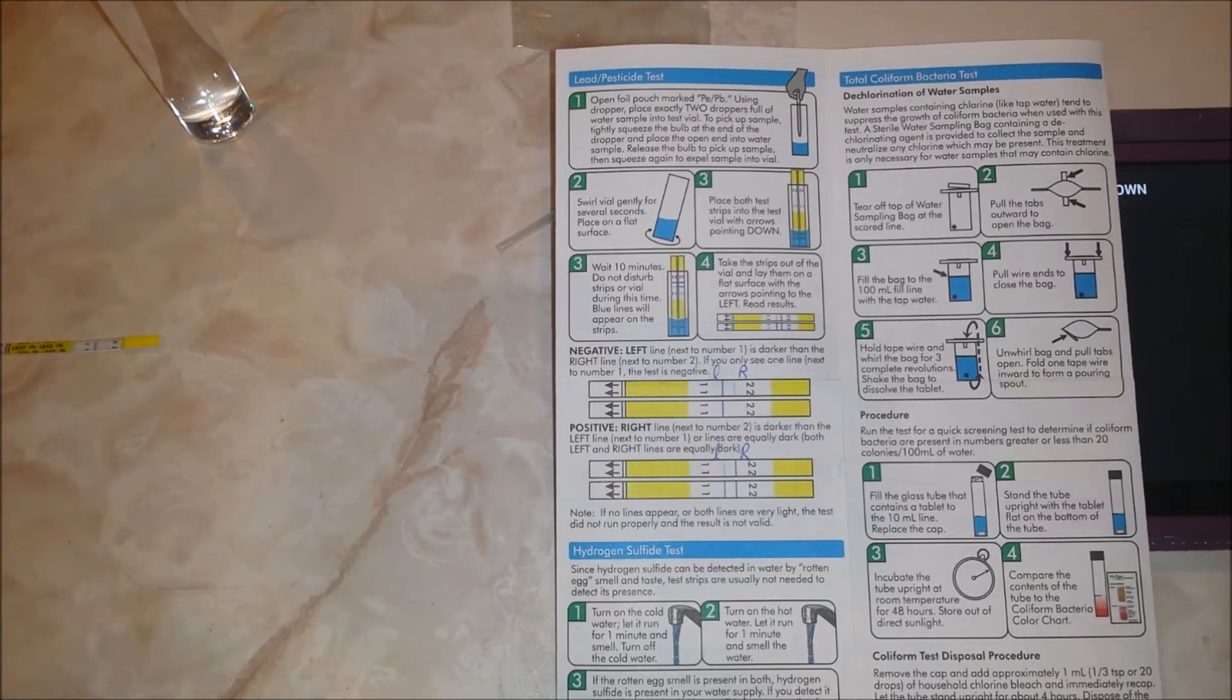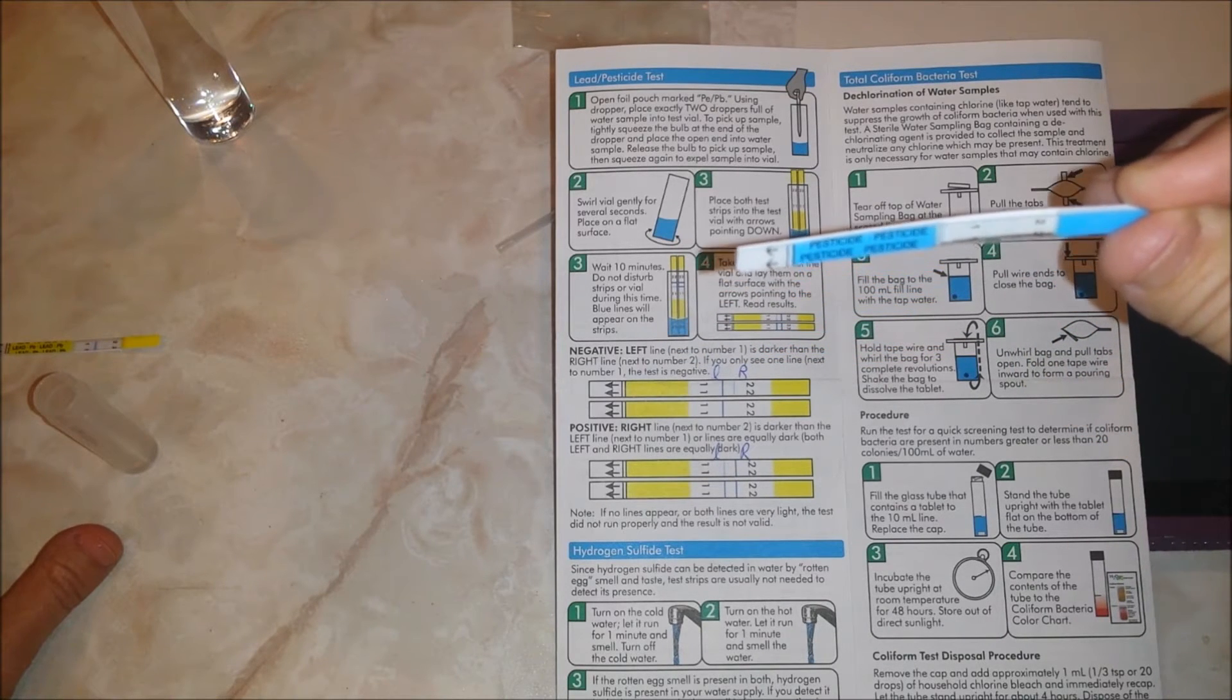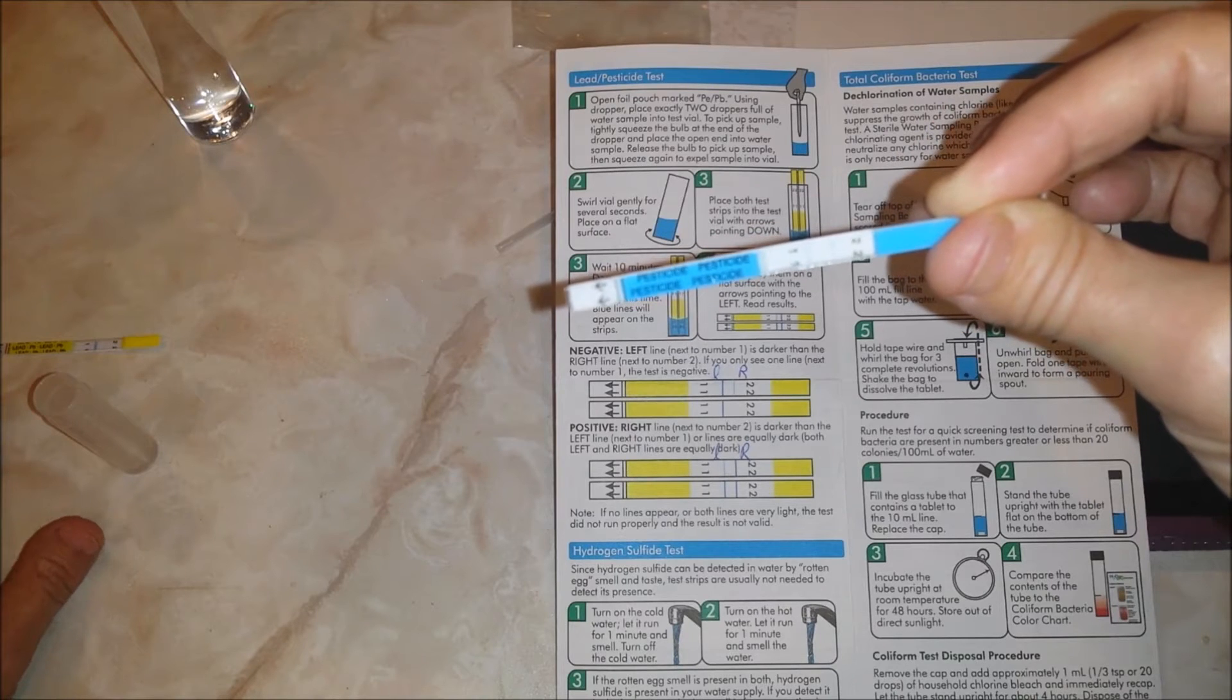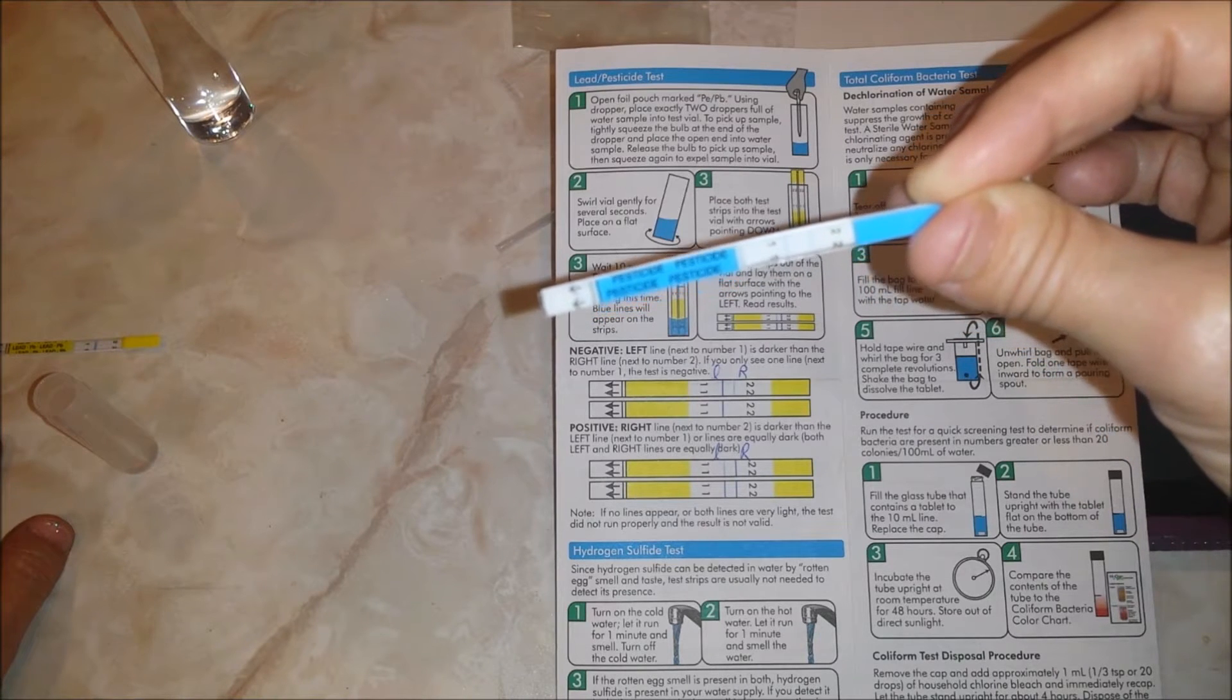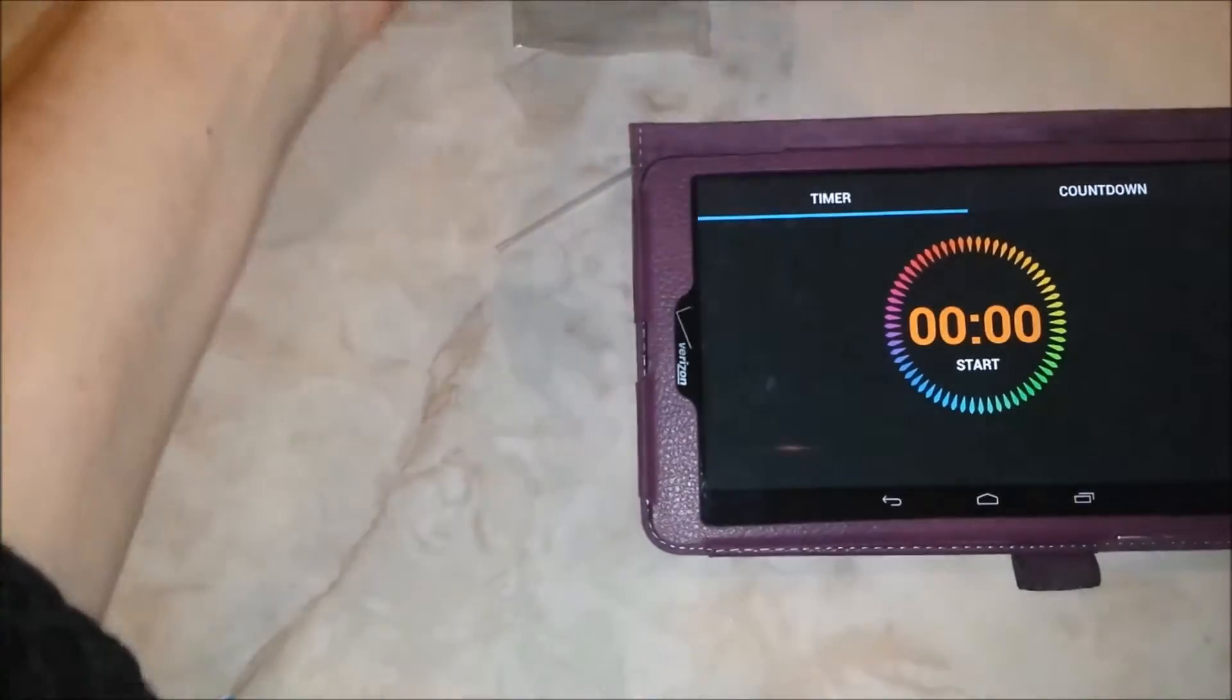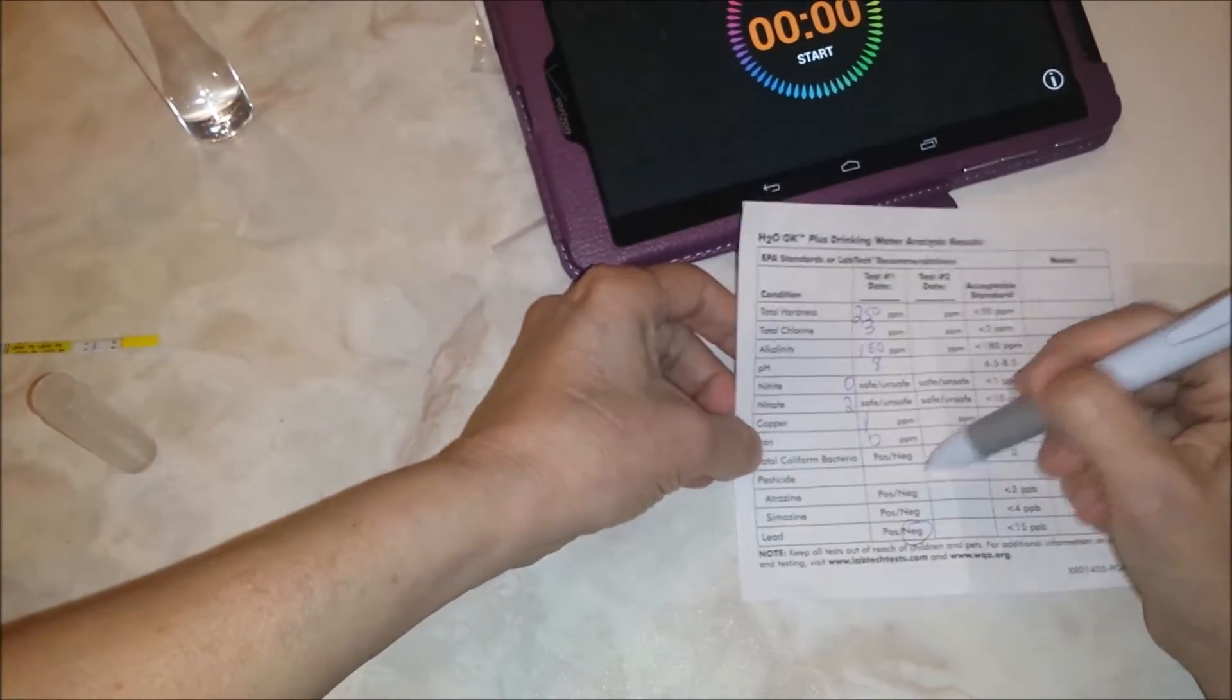Now let's go ahead and read our pesticide test. I see two lines. They're pretty light. I would say the one toward the one is a little darker. So I would have to say this is negative. It's either negative or not valid, because it says if no lines appear or both lines are very light, the test did not run properly. So the one is just a hair darker, so I would say it's negative. It's definitely not a positive test. So I'm going to record my lead as negative and my pesticide as negative.